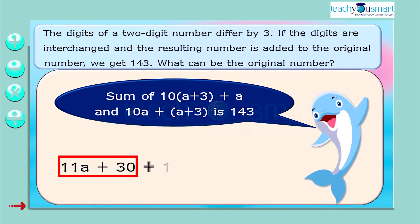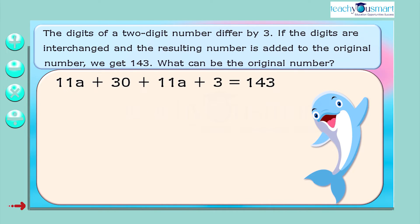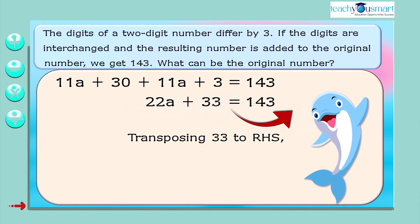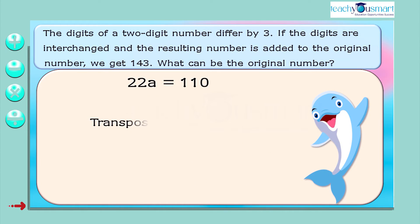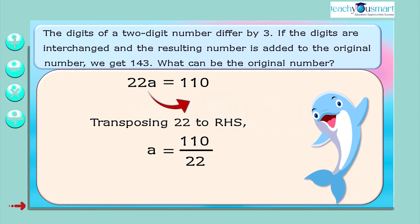That is, 11A plus 30 plus 11A plus 3 equals 143. Simplifying, 22A plus 33 equals 143. Transposing 33 to the RHS gives 22A equals 110. Therefore, A equals 110 divided by 22, that is, A equals 5.